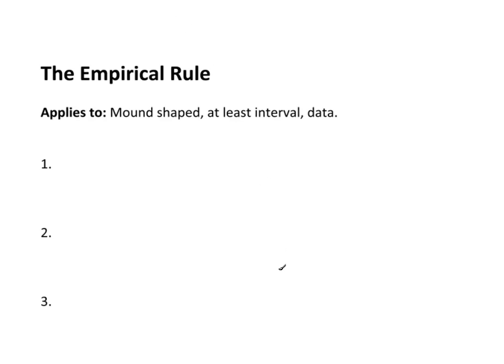Now that we've looked at the idea of standard deviation and we know how to find it, let's talk about how we use it and how we interpret it. We know that it's a measurement of variability, so obviously the bigger the number the more variability, the smaller the number the smaller the variability. But what is big and what is small? Is a standard deviation of 13 big or small? It's really case dependent — it depends on what data you're using. To start this conversation about how you actually use the standard deviation, let's talk about the empirical rule.